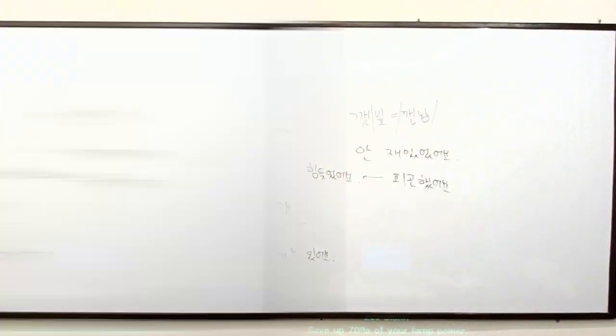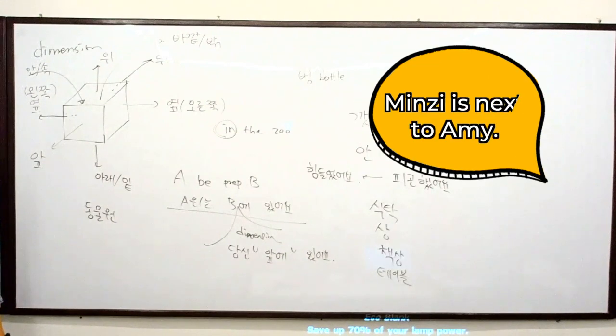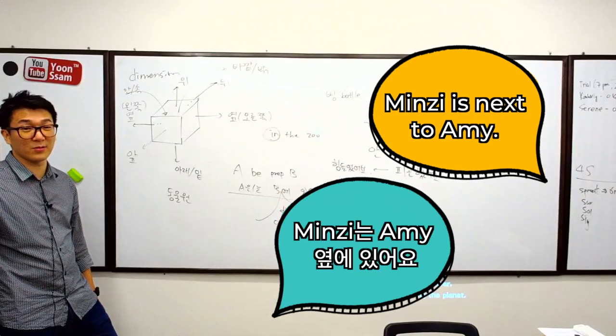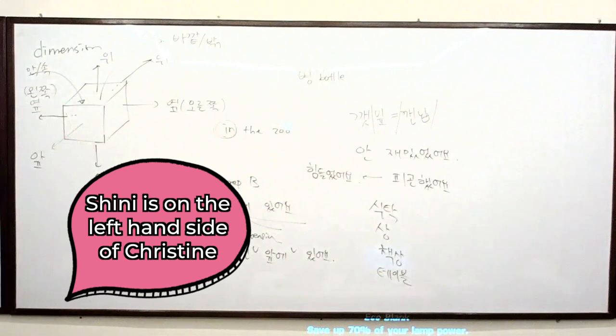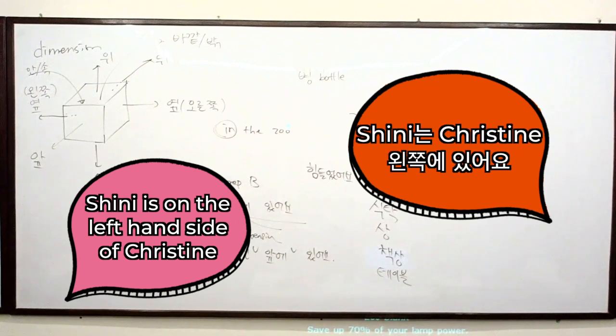Maybe also, how do you say Mingzy is next to Amy? Mingzy는 Amy 옆에 있어요. Shini is on the left-hand side of Christine. Shini는 Christine 왼쪽에 있어요.